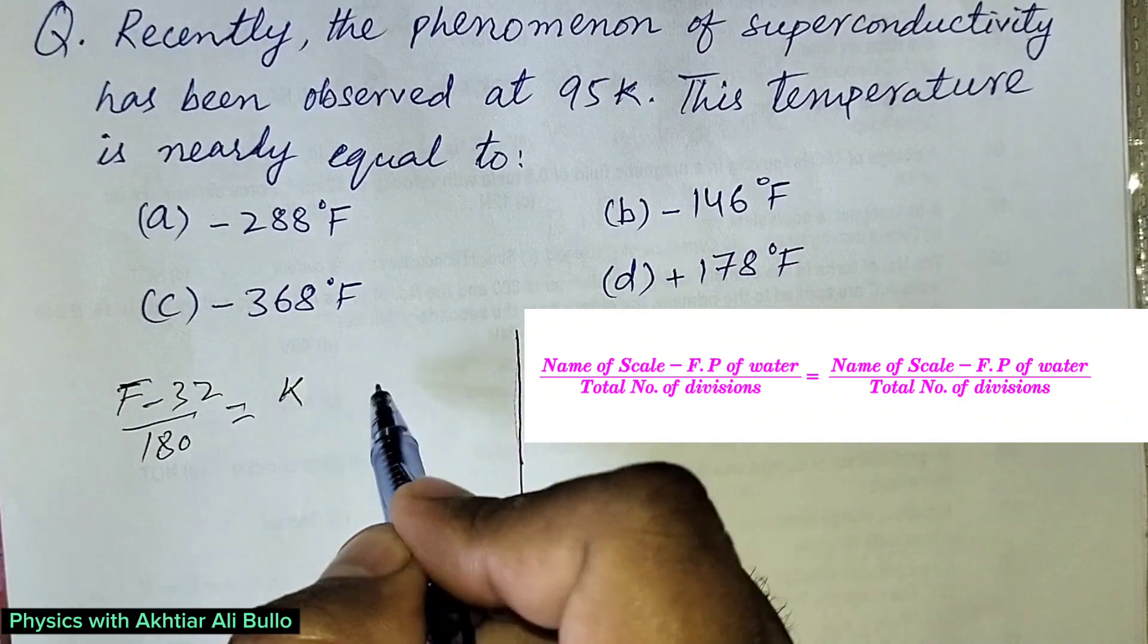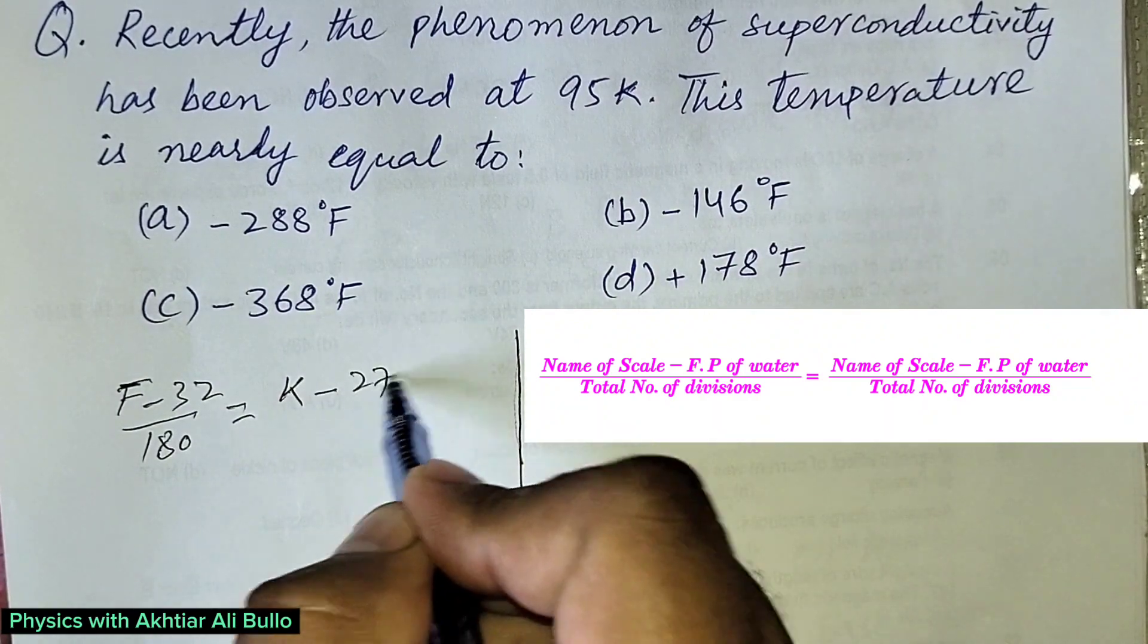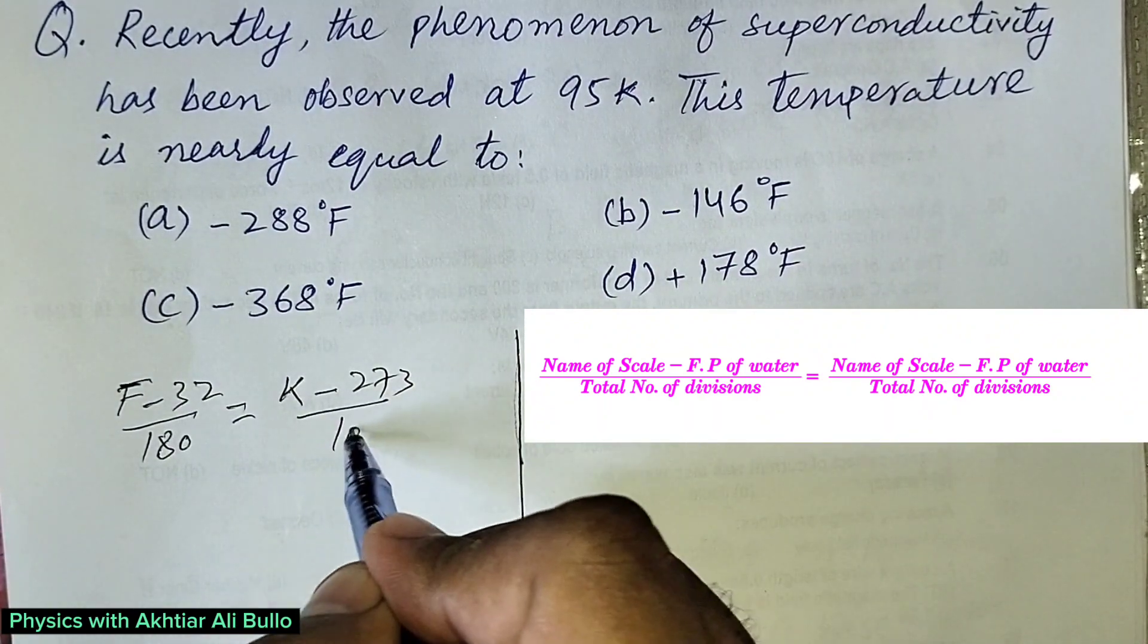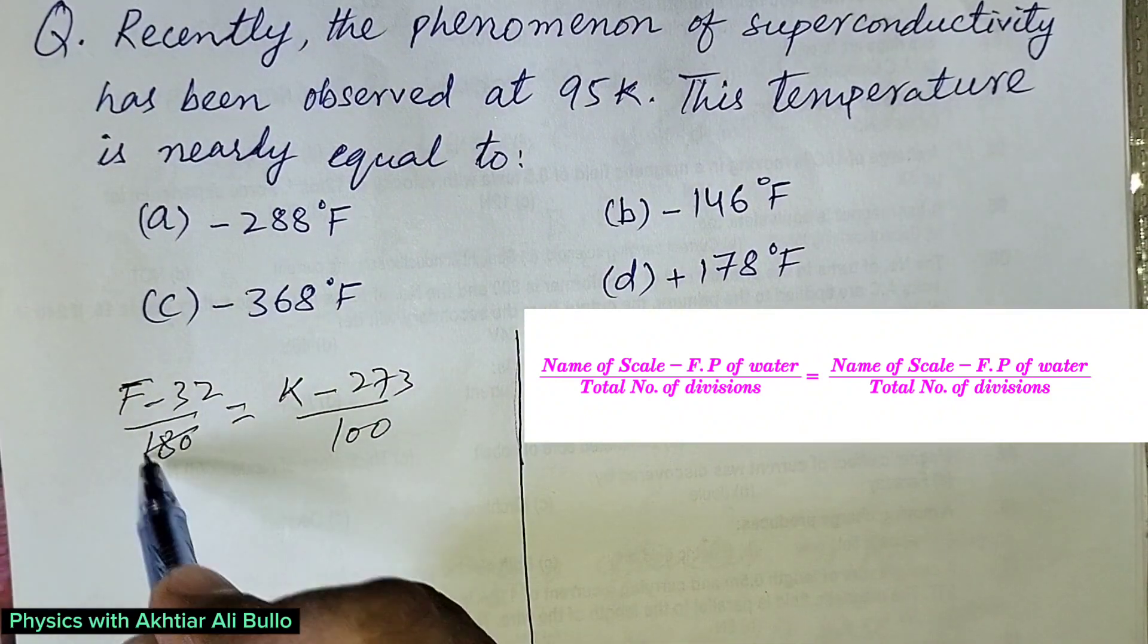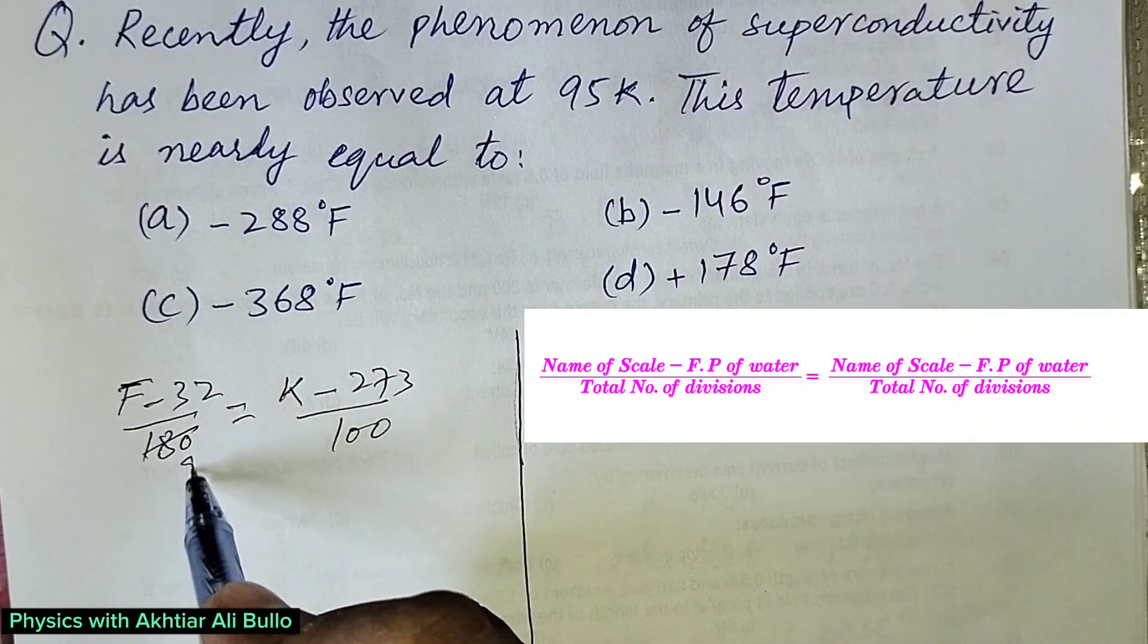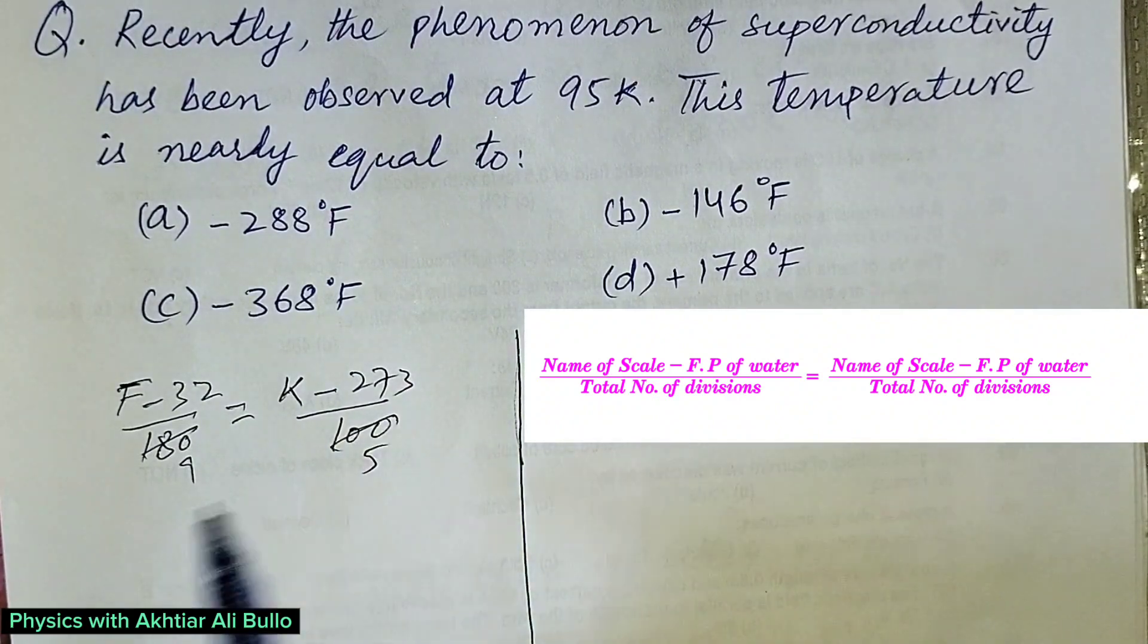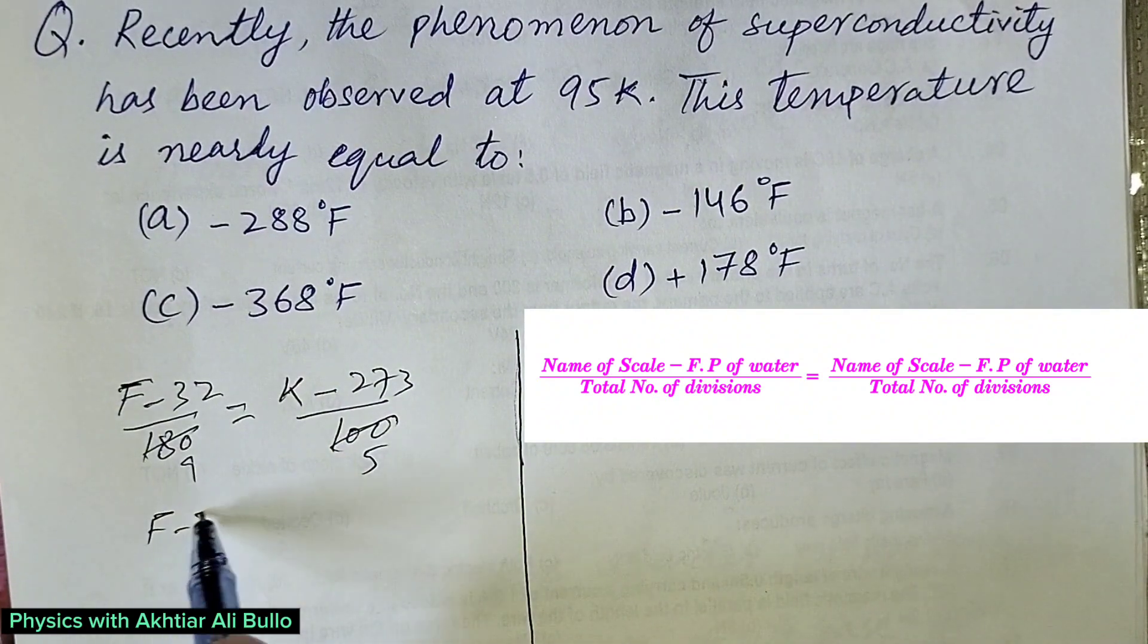For Kelvin: K minus freezing point 273, divided by 100. The ratio of 180 to 100 simplifies to 9 to 5. So (F - 32)/9...